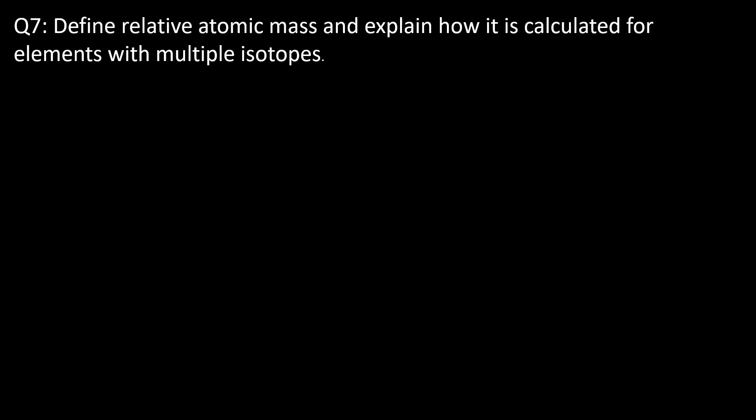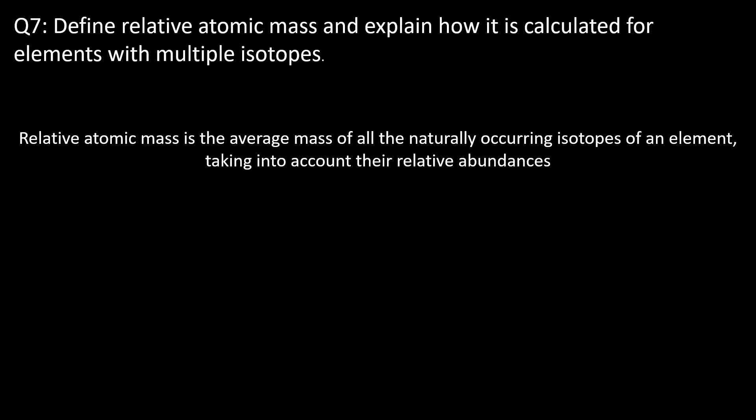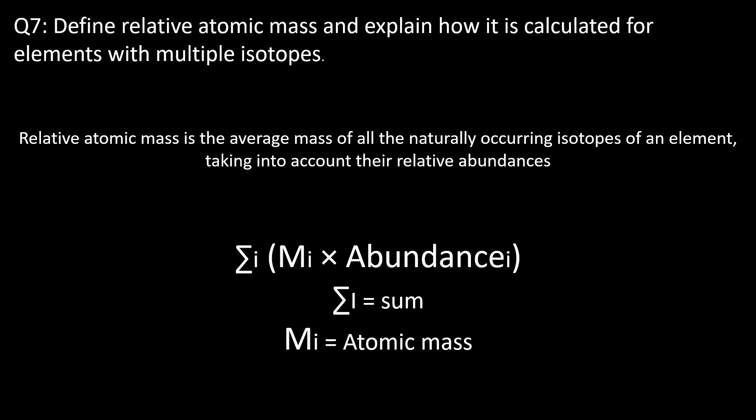Question seven: define relative atomic mass and explain how it is calculated for elements with multiple isotopes. Relative atomic mass is the average mass of all naturally occurring isotopes of an element, taking into account their relative abundances. It's usually a dimensionless number and will be the quantity you can normally see on a periodic table. To calculate it for elements with multiple isotopes, you multiply the mass of each isotope by its abundance expressed as a decimal, then sum all these values to get the relative atomic mass.